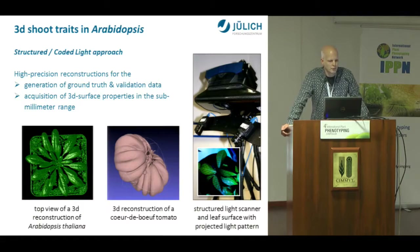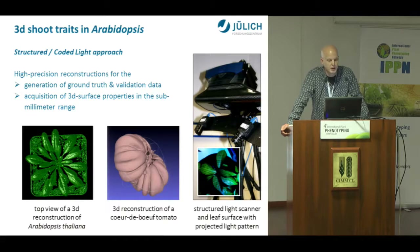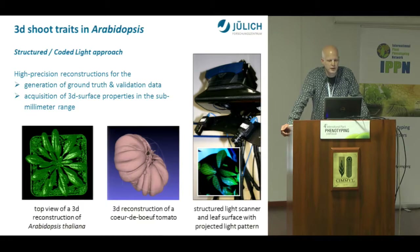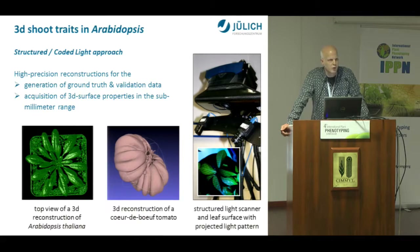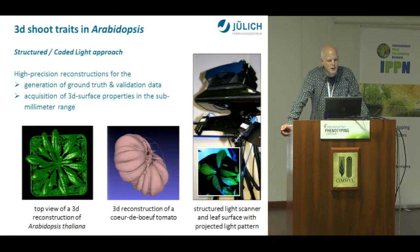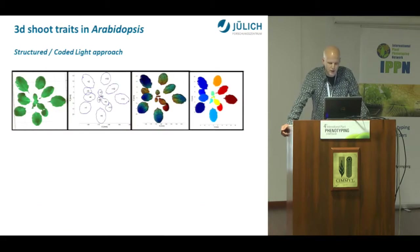I would now like to come to an approach using structured light or coded light — one of our most precise approaches with very high depth resolution. This approach projects light patterns onto leaves, encodes the leaf surface, images it with a camera, and from these image sequences the 3D surface is estimated. Here you see an example with a tomato using different views to reconstruct the whole tomato, but this is very applicable for plants like Arabidopsis, which are somewhat 2D — you need only a few scans from the top to get very good results.